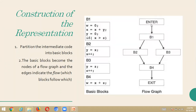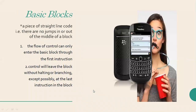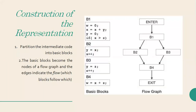When representing the flow graph, the graph should start with 'enter' and end with 'exit'. This is the representation of the basic block. A piece of straight-line code means there are no jumps in the basic block - no jumps into or out of the middle of the block. We directly write the code without any jumps.